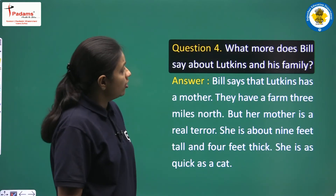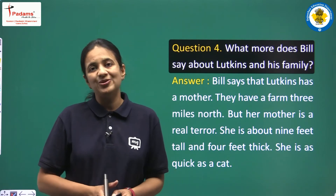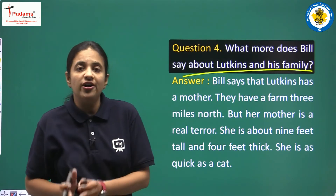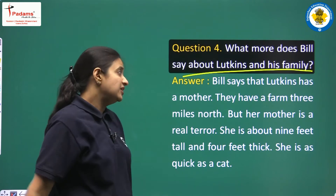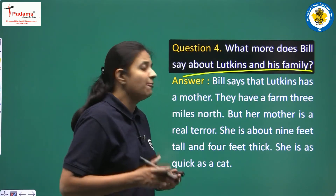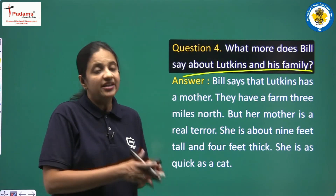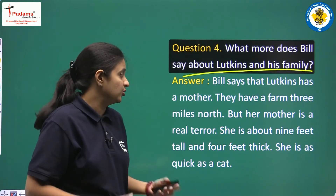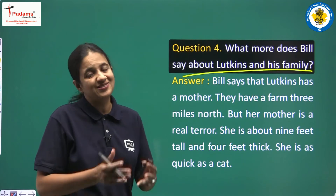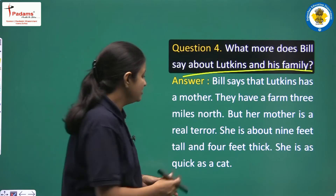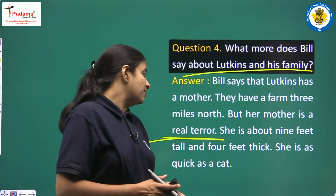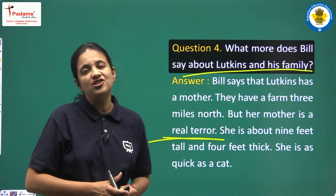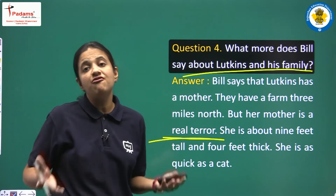Question 3: What more does Bill say about Lutkins and his family? Bill says that Lutkins has a mother and they have a farm three miles north. About Lutkins' mother, Bill says she is really a terrible and horrible woman — she is about nine feet tall, four feet thick, and as quick as a cat.